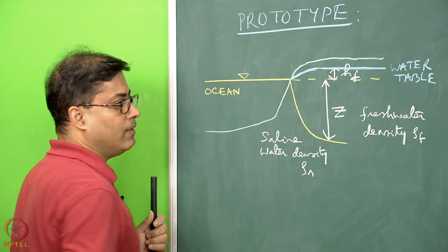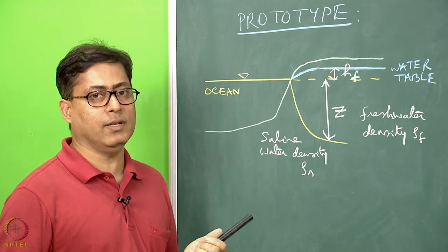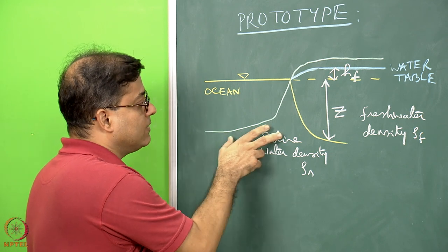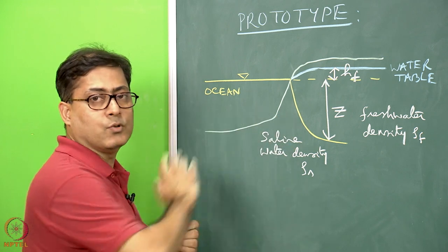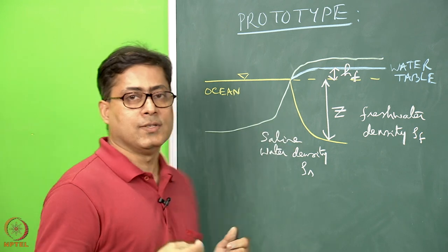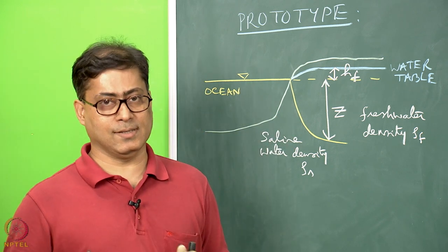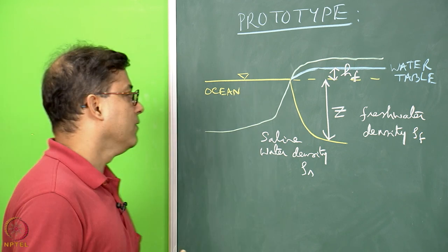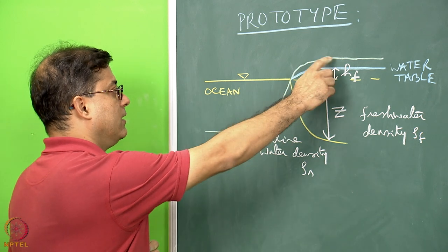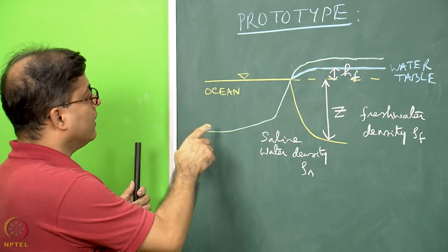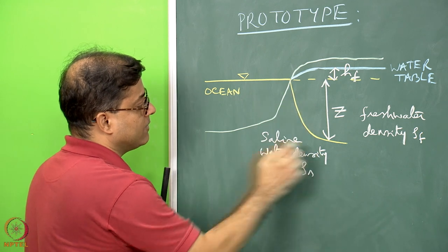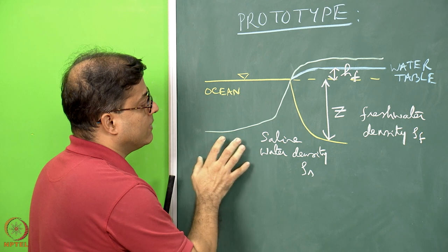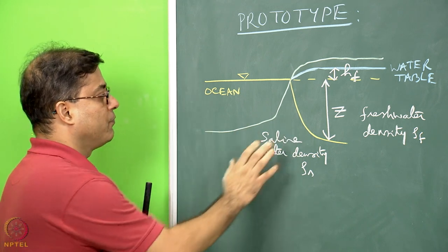This is the ocean water level. In the summertime particularly, in coastal areas worldwide, it has been seen that saline water goes inside the land portion. This leads to salty water coming up in the wells in the land area, giving trouble in terms of ground water for people staying in the coastal area. The yellow line represents the extent up to which the saline water of density rho-s has gone inside the land part.